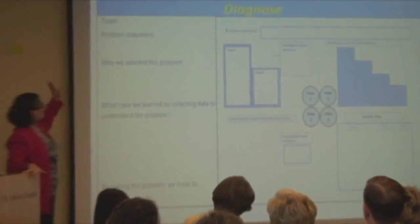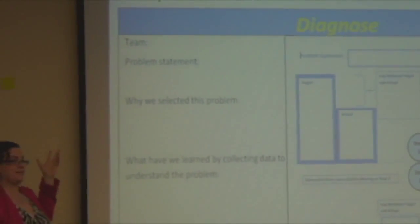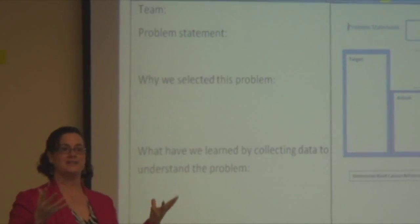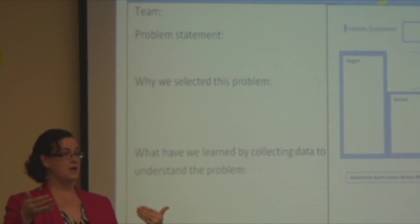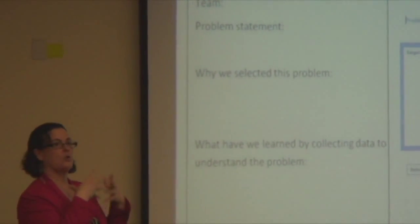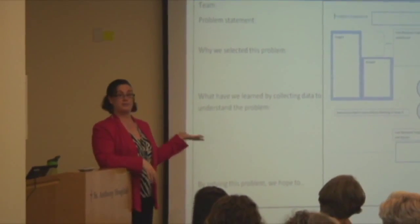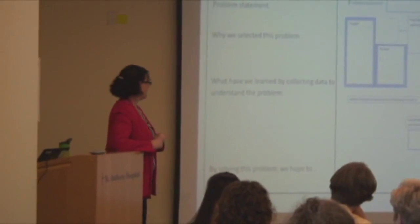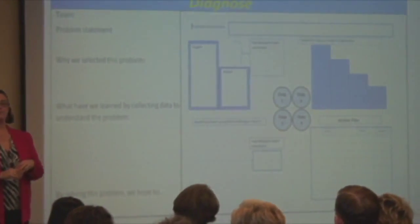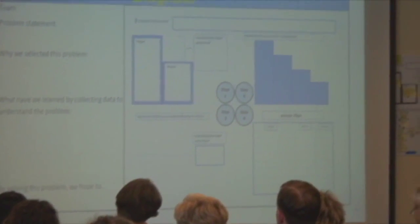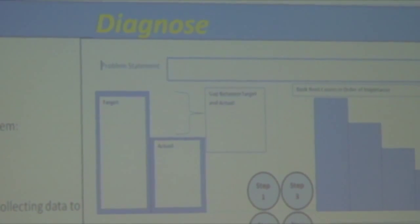They'll walk you through their problem statement and why they selected that problem. As Rosie alluded to, there was a value stream with lots of splats — opportunities for improvement — ways we were not meeting our length of stay or readmissions goals. They'll walk you through how they selected the problem, what they've learned by collecting data, what they think solving this problem will achieve, and then they'll walk you through their A3 — a visual, organized way to solve problems.